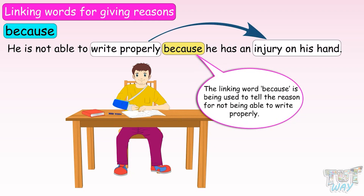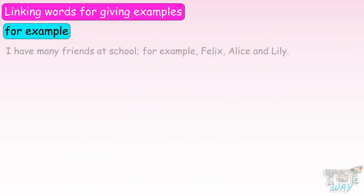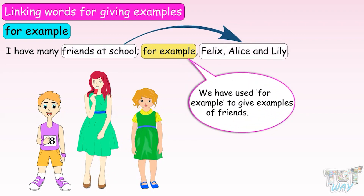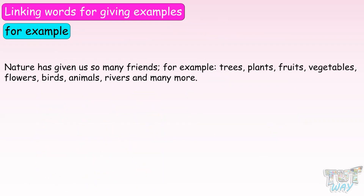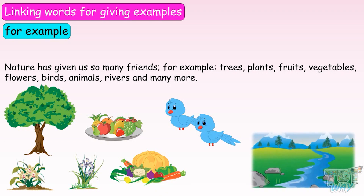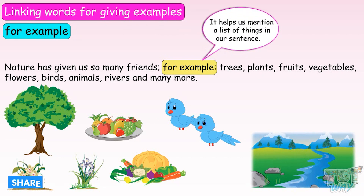So, linking words help us to convey the purpose or reason for our actions. Now let's learn one more type of linking words. The linking word 'for example' is used for giving examples. 'Nature has given us so many friends. For example, trees, plants, fruits, vegetables, flowers, birds, animals, rivers, and many more.' So, 'for example' enables us to give many examples or helps us to mention a list of things in our sentence.